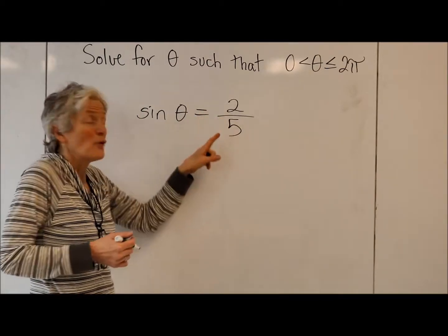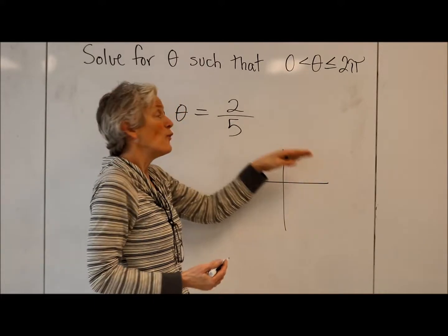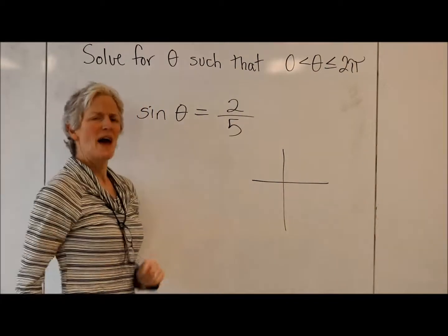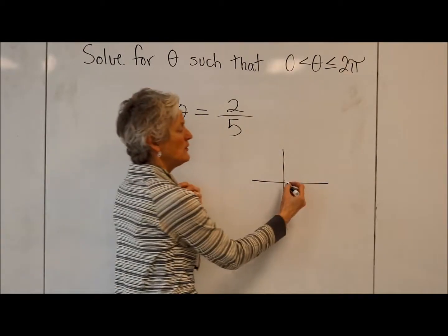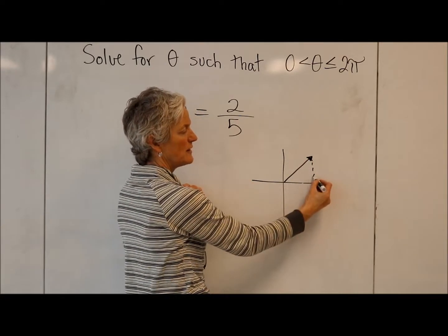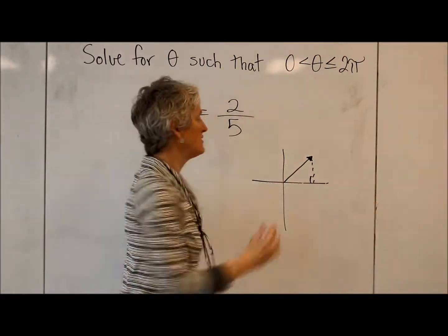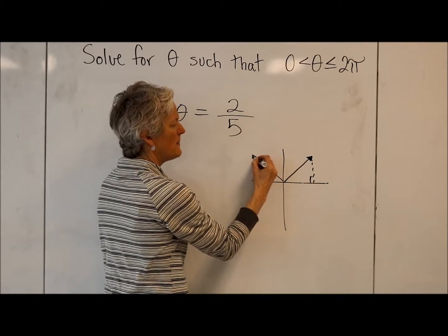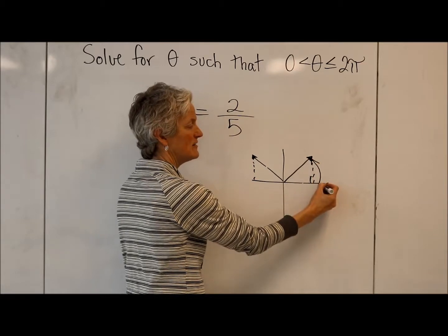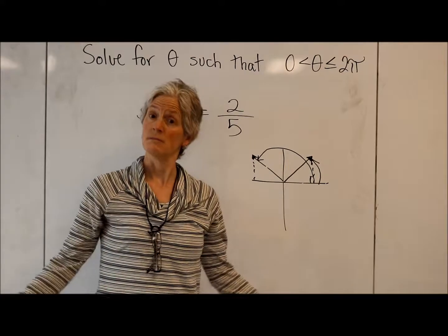Let's remember, sine is opposite over hypotenuse, or in the unit circle, it's the y value over the rotating arm. Sine is positive when y is positive. So that's in my first quadrant - one angle will terminate there. I can make a little reference triangle. And the other time sine is positive is in the second quadrant. So I'm going to have two possible answers, one rotation that ends there and the second rotation that ends there in this domain.